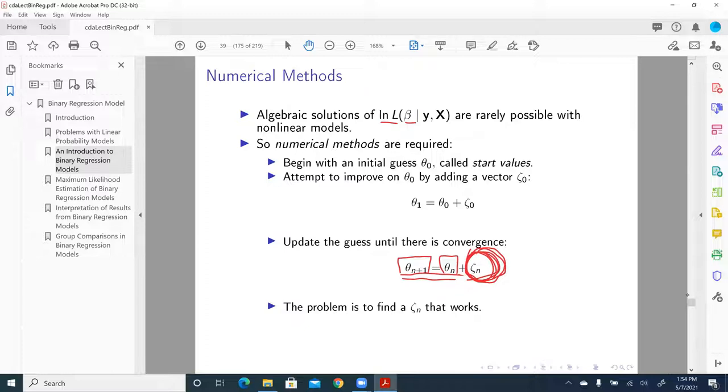So how to calculate zeta n? It is a function, as I said, of gradient and Hessian. What is the gradient? Gradient is we take the first partial derivative of log likelihood with respect to theta. And here, actually, it's theta. At this point, when theta is equal to theta n, we get zeta n. Well, part of zeta n, because that's just a gradient.